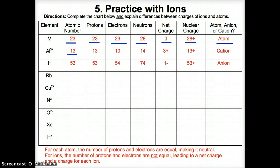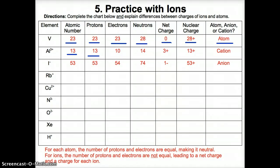For Al³⁺, the atomic number is still 13, giving 13 protons. The 3+ charge means we subtract 3 electrons from the neutral atom's 13 electrons, giving 10 electrons. Neutrons equal Al's rounded mass number of 27 minus atomic number 13, giving 14 neutrons. Net charge equals 13 protons minus 10 electrons, giving 3+. Nuclear charge is 13+. This is a cation since it is a positively charged ion.